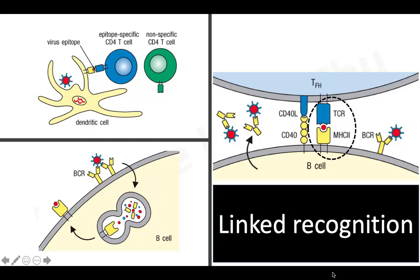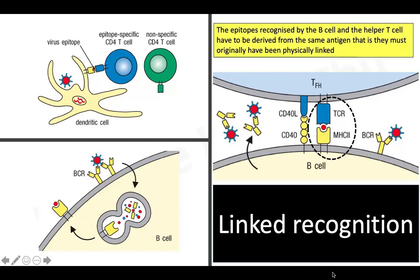So the principle of link recognition is that for a helper T cell to be able to activate a B cell, the epitopes recognized by the B cell and the helper T cell must be derived from the same antigen — that is, they must have originally been physically linked. Based on this principle, the conjugate vaccine is developed.